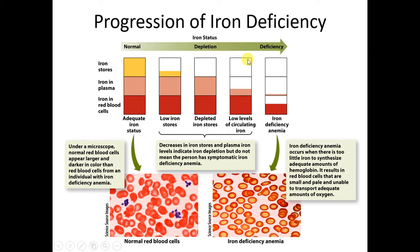Iron deficiency is quite common in premenopausal women. The reason, of course, is the loss of blood — there's very little loss of iron from the body other than blood loss. Women who menstruate monthly are at higher risk for iron deficiency. It doesn't happen overnight. You see the progression from normal stores, normal iron in the plasma, normal iron in the red blood cells — then stores are depleted first, then plasma iron, and finally the iron in the red blood cells. So hemoglobin and hematocrit being low is a late-stage indicator of iron deficiency anemia.